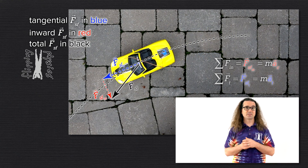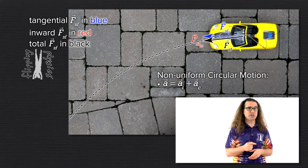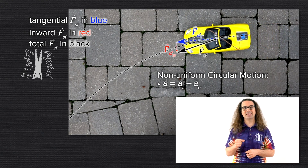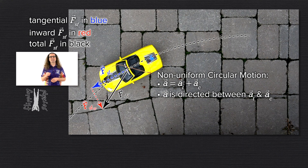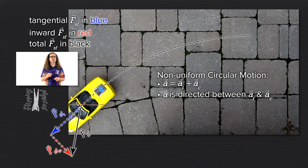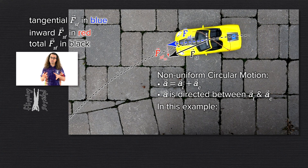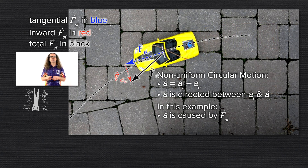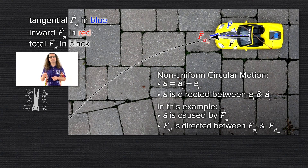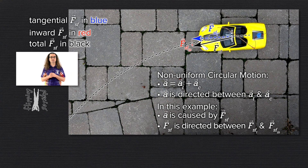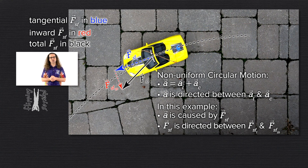The main takeaways from this lesson are: non-uniform circular motion has both a tangential and centripetal component to its linear acceleration. Therefore, the linear acceleration of the object acts in a direction between the tangential and inward directions. And in this example, linear acceleration is caused by the force of static friction, which acts in the same direction as the acceleration of the car. Thank you very much for learning with me today. I enjoy learning with you.